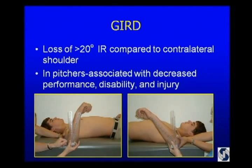Scapula dyskinesis can be from a posterior inferior capsular contracture, which is GERD. There's no pure definition in the literature, but anywhere from 20 to 25 degrees loss of internal rotation compared to the contralateral side, and that has to be measured with the scapula fixed — you do that in the supine position. If somebody clearly doesn't have scapular dyskinesis and on evaluation has full internal rotation, you don't have to go through this measurement.